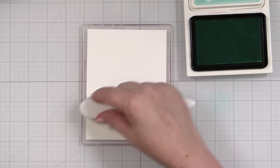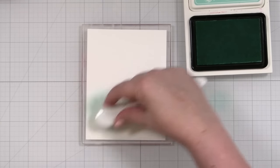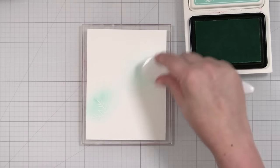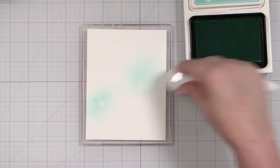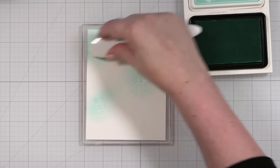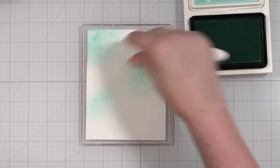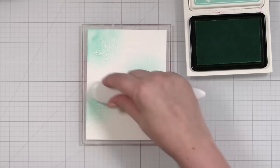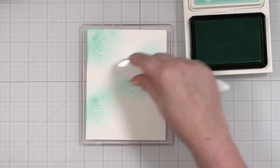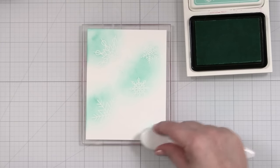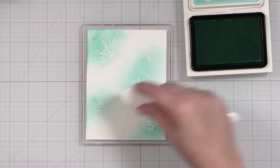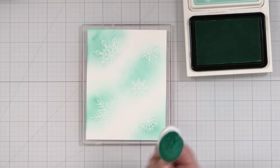And I'm just going to add color around the panel. You can see the snowflakes will start to show up. And I'm going to be blending three colors on here to create pretty backgrounds for my flakes. Love that.